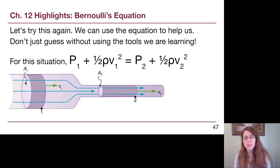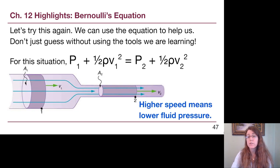So if the velocity is bigger in location two, which means that term, the kinetic energy type term, is bigger for location two, then for the left and right side to balance here, even without putting in numbers, the pressure actually has to be higher at location one. This is a really important takeaway for us.